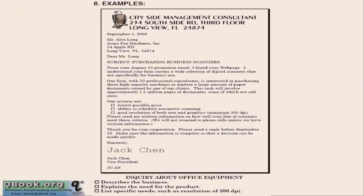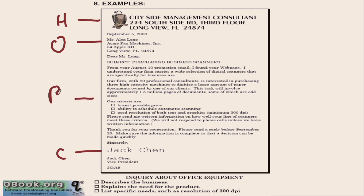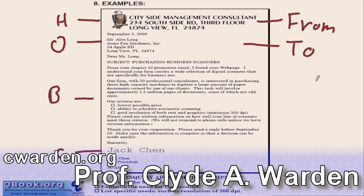Let's look at some overall examples, which are also inside your ebook. You can see here an example very clearly laid out. Up here we have the heading, here we have the opening, here we have the closing, and here we have the body. So this heading is who is this from, and this opening is who is this to, and this closing is who is it from.